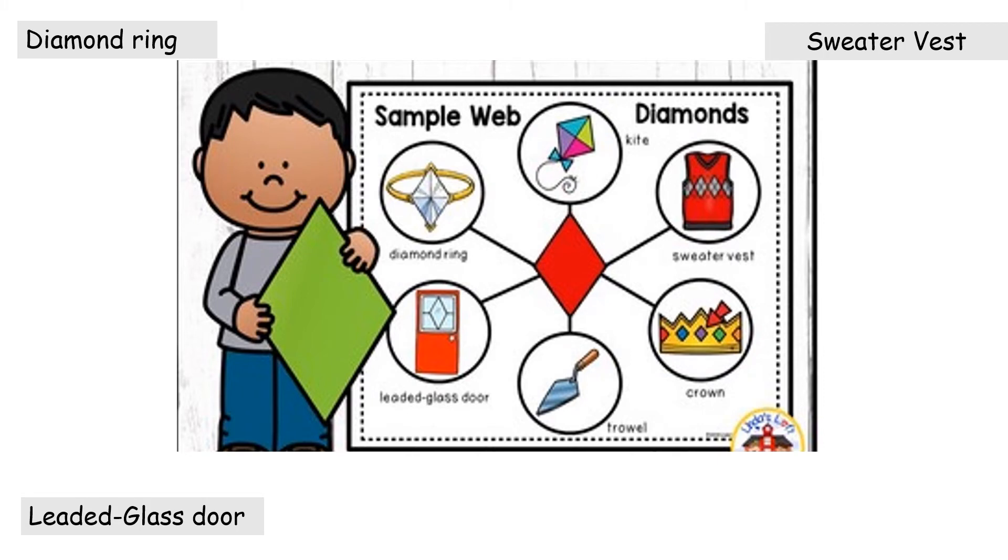Sweater vest. Sweater vest has shapes of diamond. Trowel. Trowel has a shape of a diamond. Crown.